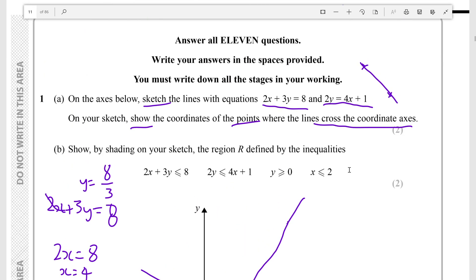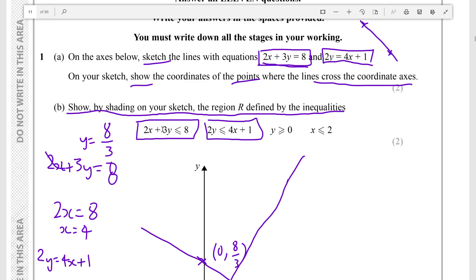So that's part (a) of the question completed. And then now it's telling us to show by shading on your sketch the region R defined by these inequalities. Now what jumps to mind is that this inequality is similar to this equation and this inequality similar to this equation, so I think that we can just use the same lines because it's the same equation but instead of an equal sign there is a less than or equal to sign.